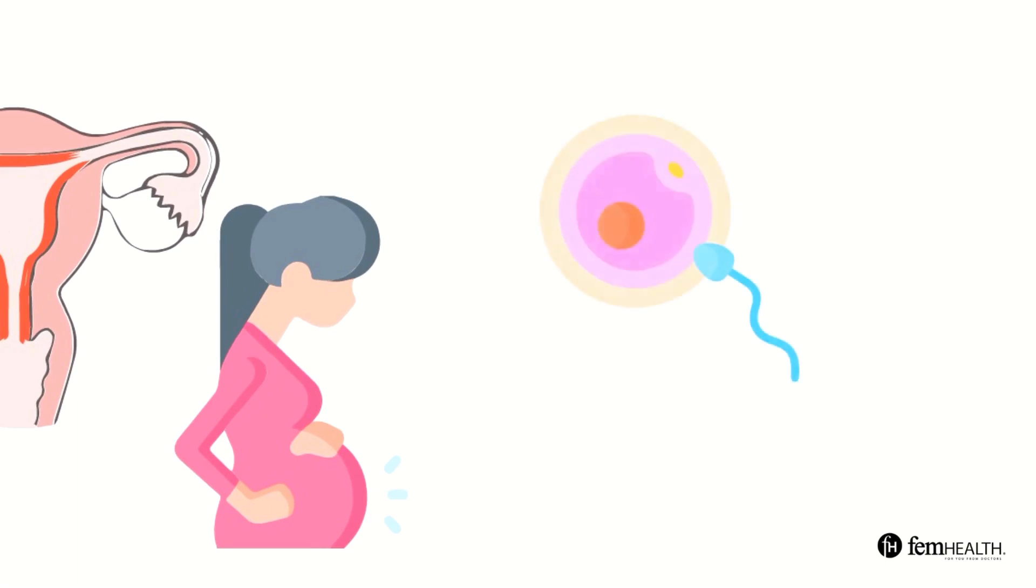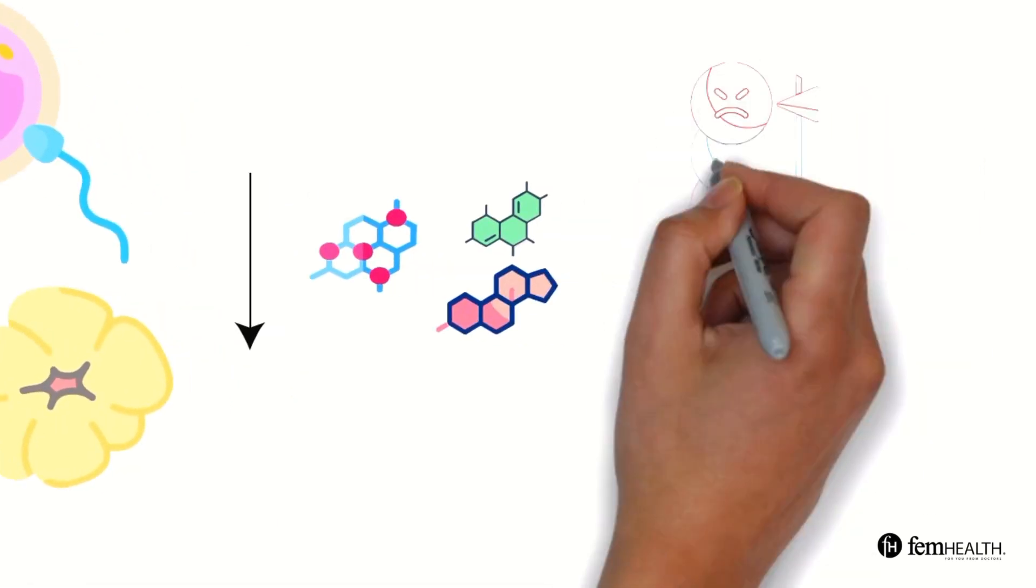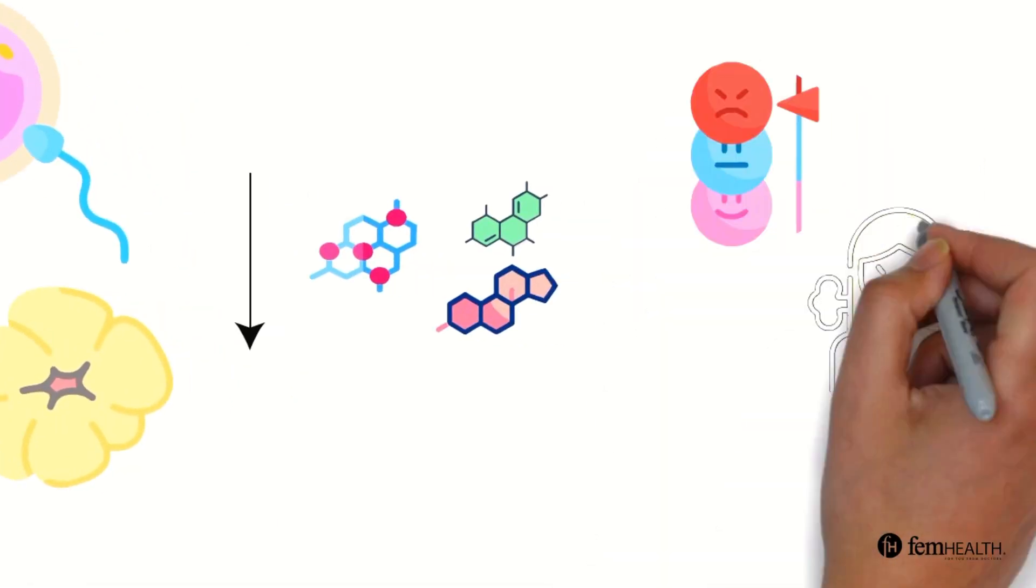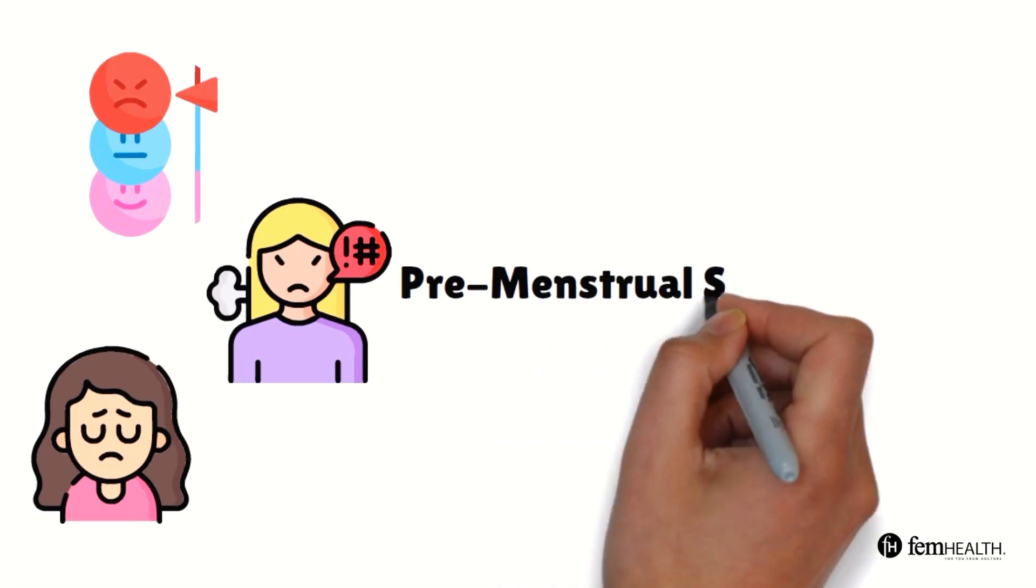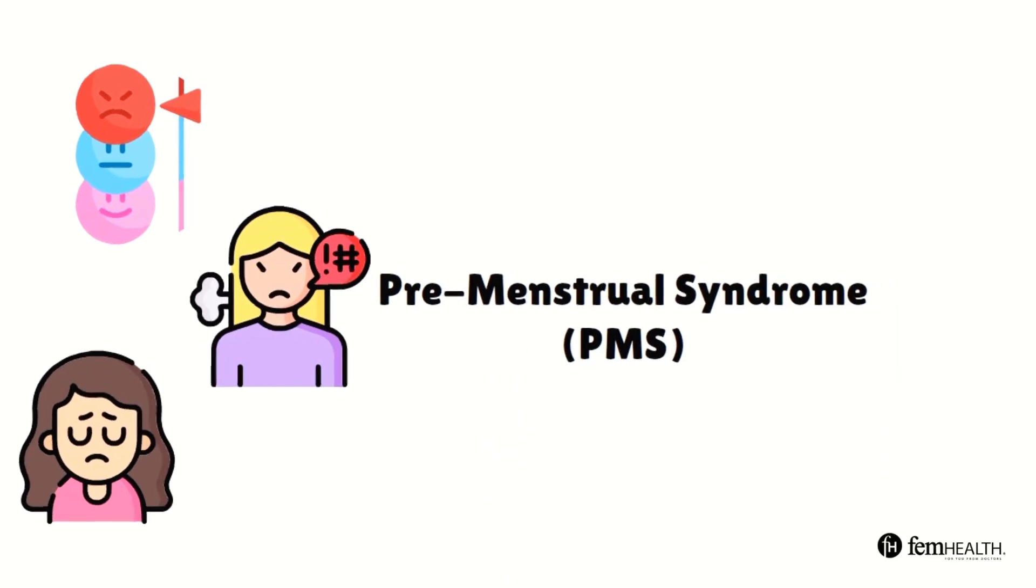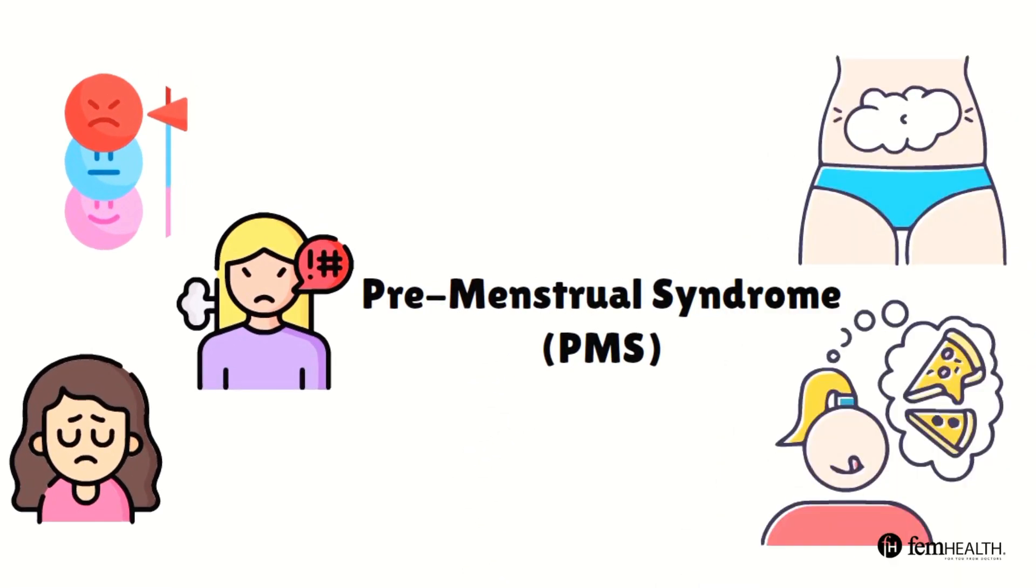If the egg is not fertilized the corpus luteum breaks down and the hormone levels drop. This drop in hormone can cause mood swings, irritability, as well as sadness. People can experience this as what we know as PMS or premenstrual syndrome. Some people may also feel bloated, tired, as well as have food cravings.